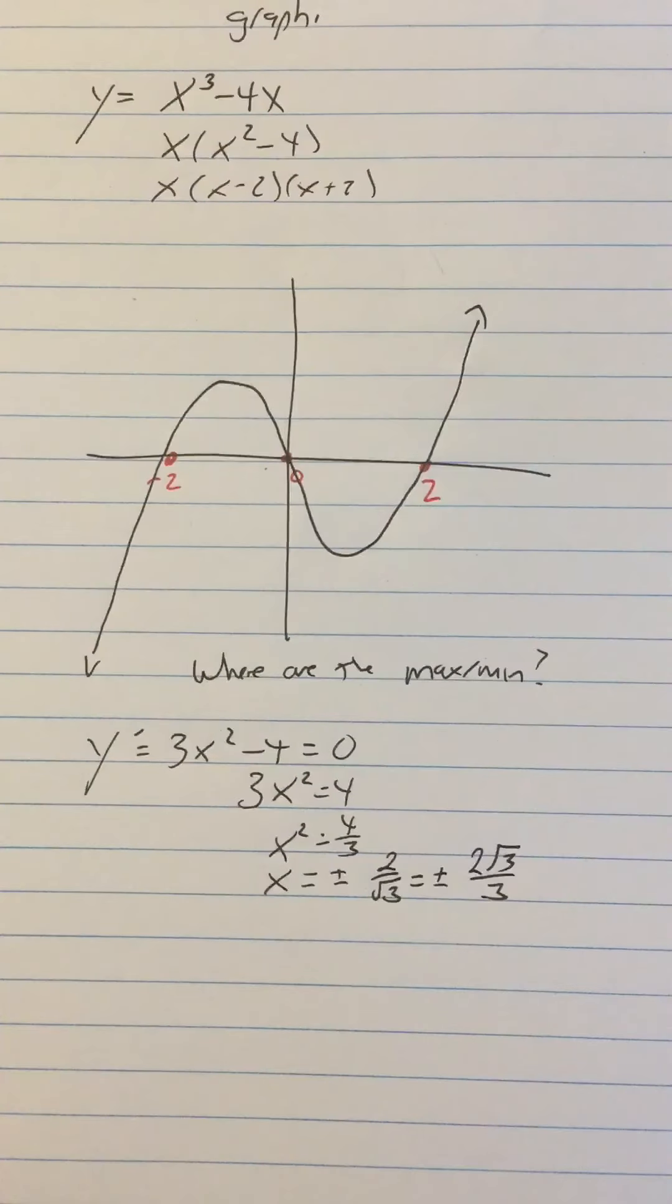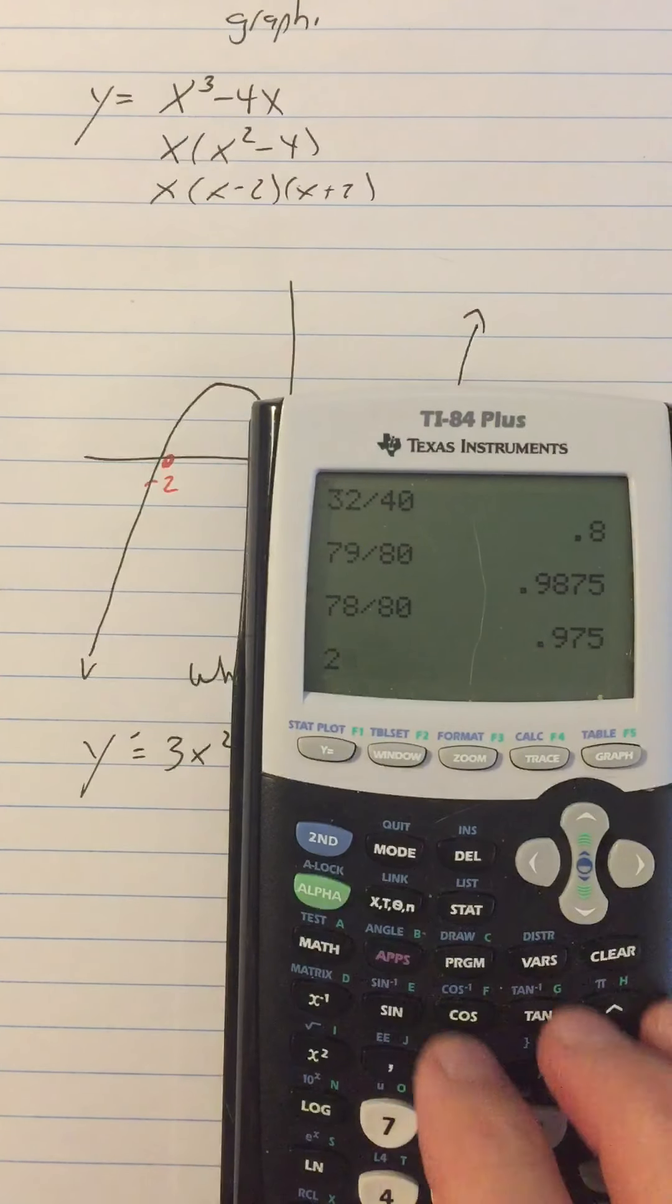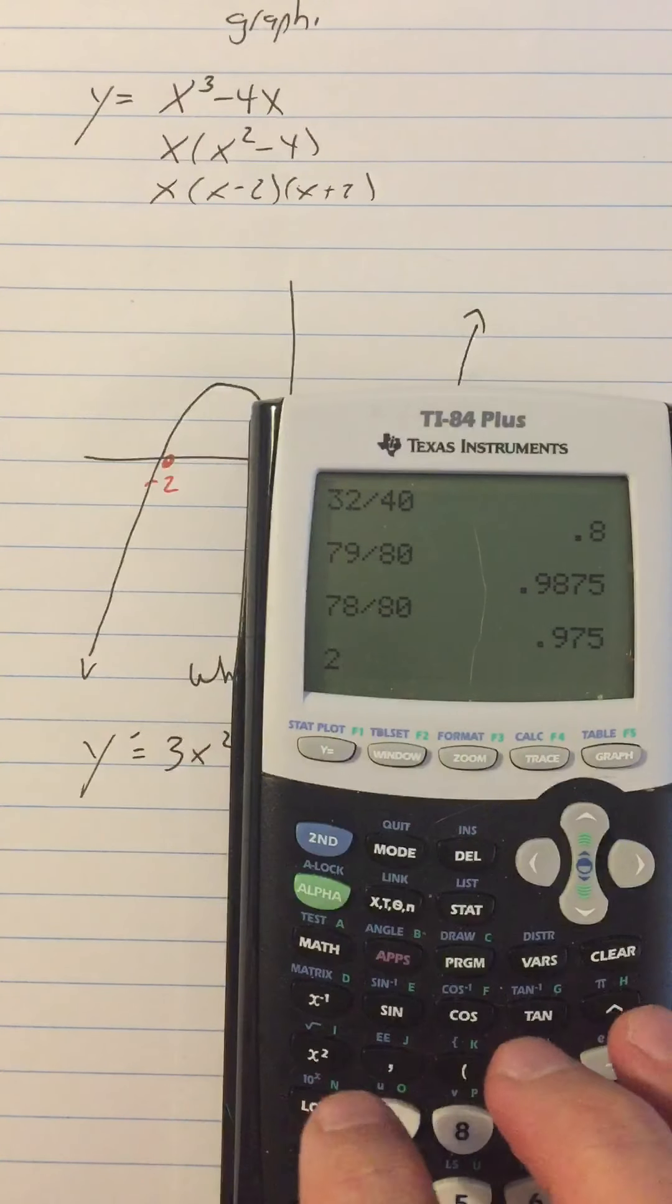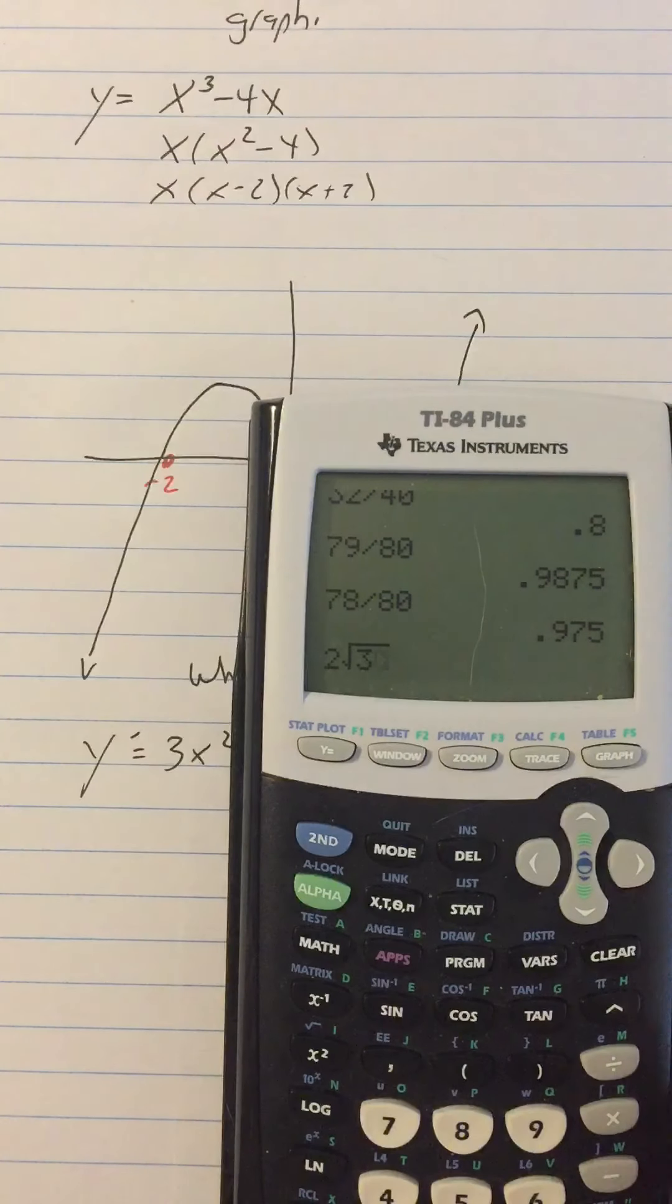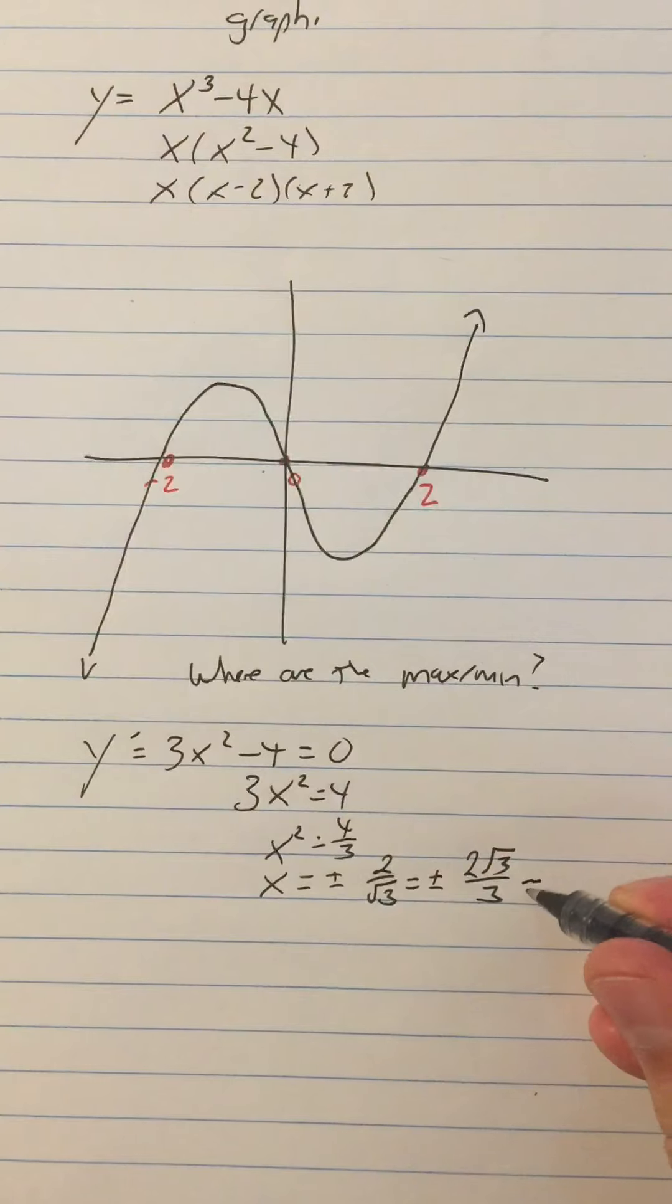So let's just go ahead and get decimals for that this time. What is 2 square root of 3 divided by 3? It's 1.155 to take three decimal places. So it's approximately plus or minus 1.555.